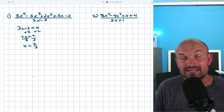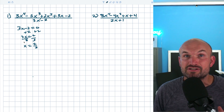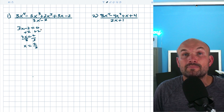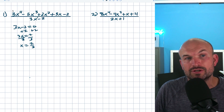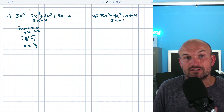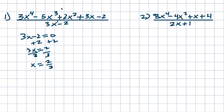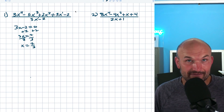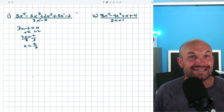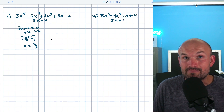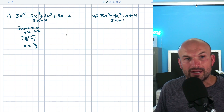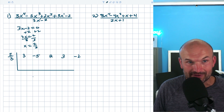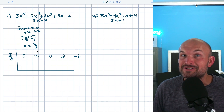Now that you have your k, put it on the outside of your synthetic division box. On the inside, take the coefficients of the polynomial in the numerator. It's very important to make sure you have every single term. In this case I have degree four, three, two, one, and the constant — no missing terms. If you did have a missing term, use zero as a placeholder. If there's no number in front of a coefficient, use the number one.